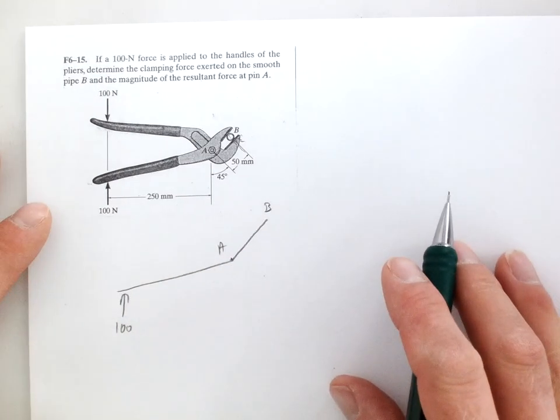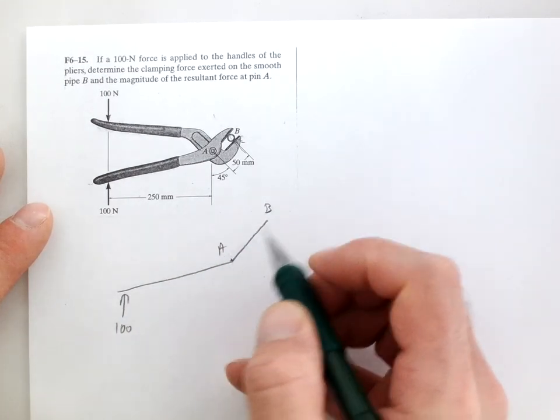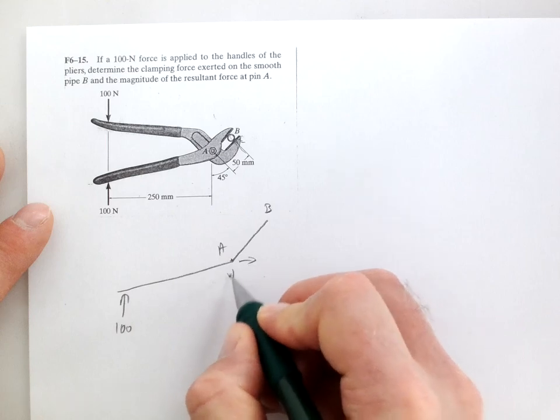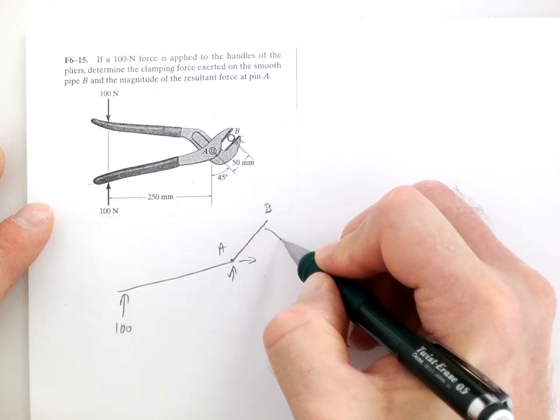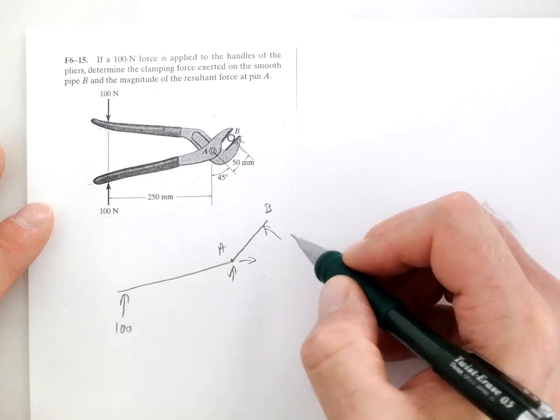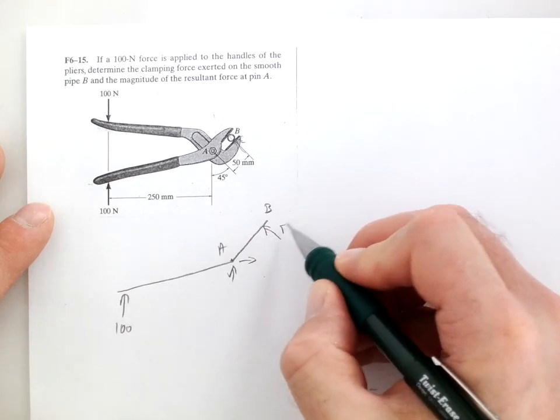Now at A we have two reactions, a horizontal and a vertical. At B we have a perpendicular force. So let's sum the moments about A to get the force at B.